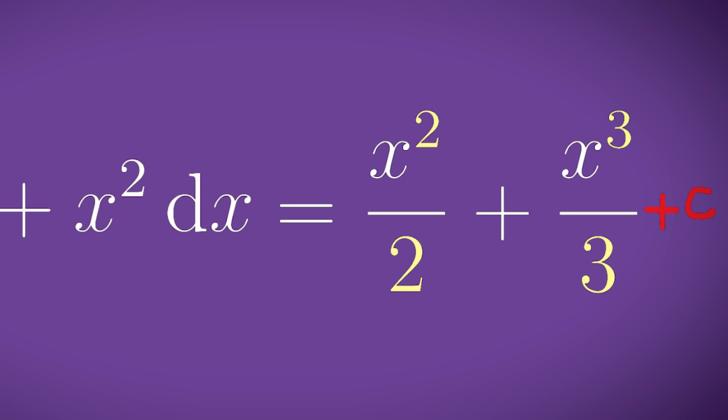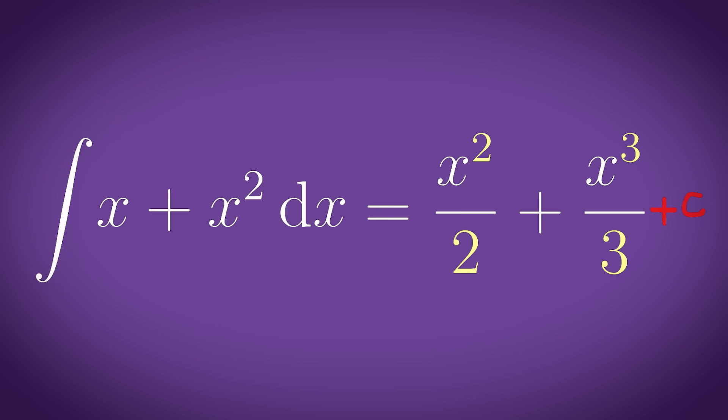Don't forget to whack a plus c on the end because when you find the derivative the constants just disappear. So of course when finding the antiderivative the constant's just going to reappear unlike your dad.